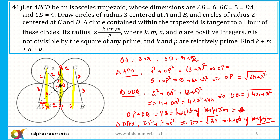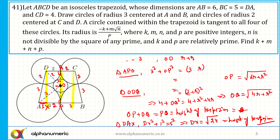So the height of the trapezoid is root 24. We also know that OP plus OQ equals the height of the trapezoid. So we can equate: root of (6R plus R²) plus root of (4R plus R²) equals root 24.